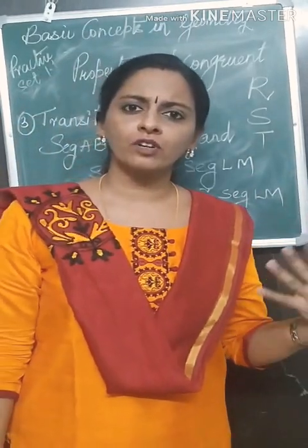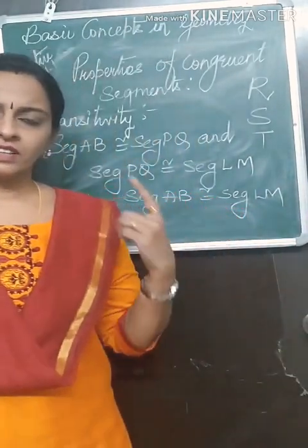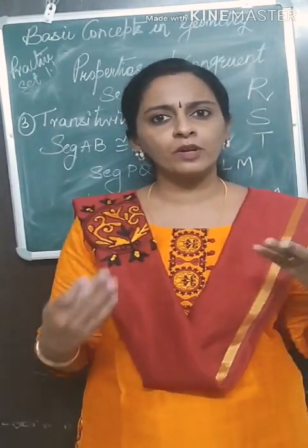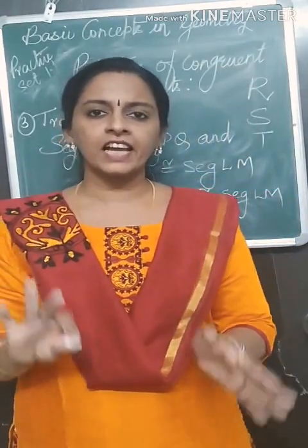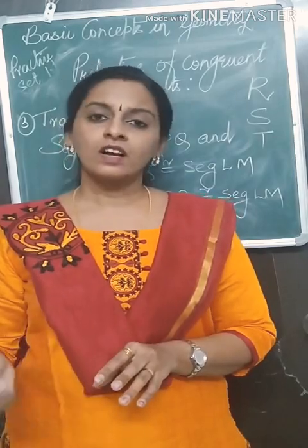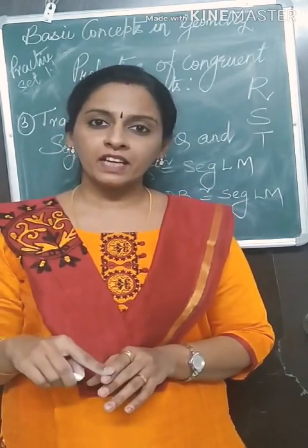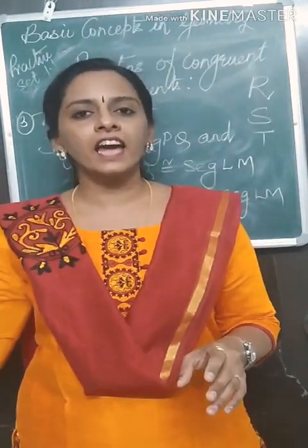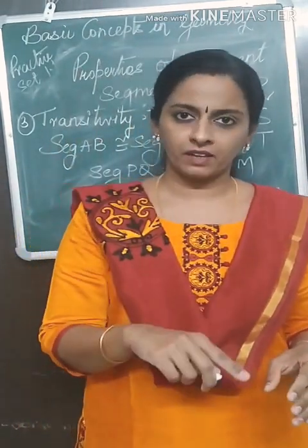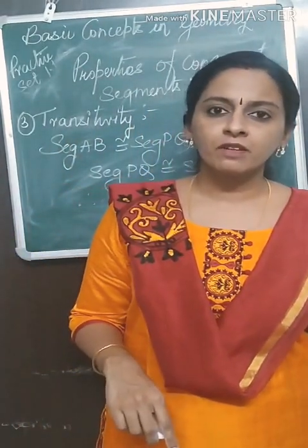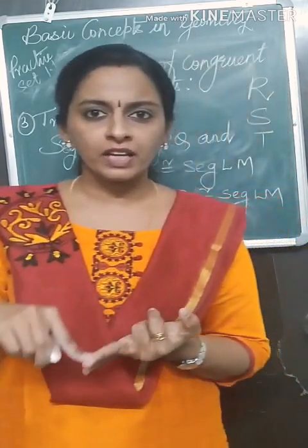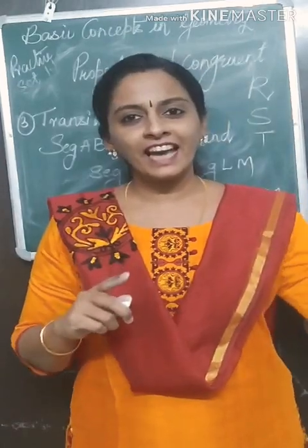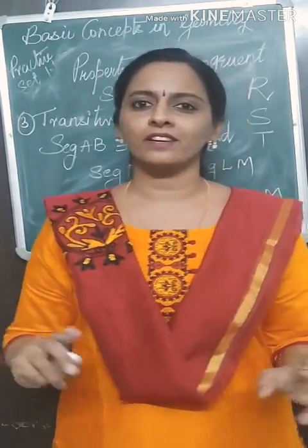The same RST properties apply to congruent angles. Reflexivity: angle A is congruent to angle A. Symmetry: if angle B is congruent to angle A, then angle A is congruent to angle B. Transitivity: if angle A is congruent to angle B, and angle B is congruent to angle C, then angle A and angle C are both congruent.